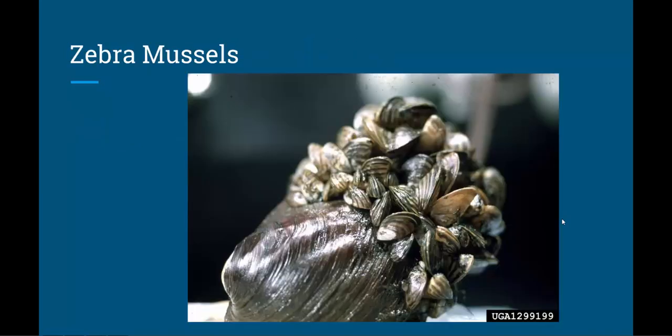An example of an invasive species in Lake Michigan is zebra mussels. In this picture, the zebra mussels are the smaller shells that are attached to the large clamshell. Zebra mussels are what are known as filter feeders — they filter out plankton that's in the water, and that removes a food source for the minnows and small fish in Lake Michigan.